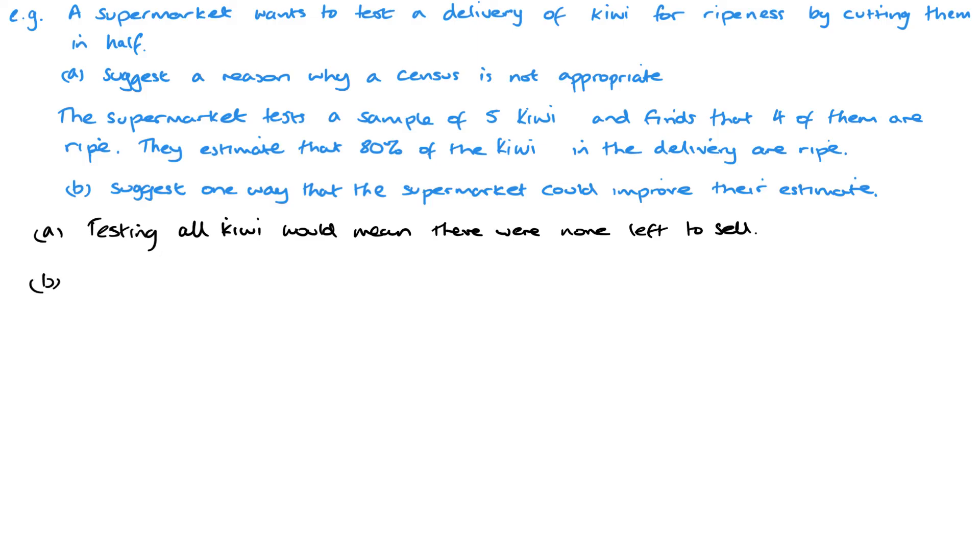Now part b, the supermarket tests a sample of five kiwi and finds four of them are ripe, so they estimate that 80 percent of the kiwi in the delivery are ripe. Now one way we can improve on this is simply to test more kiwi, a larger sample, because a larger sample would therefore generate a more accurate estimate. It's hard to say exactly what sample size you would take, really depends on how many kiwi you've bought. If you've bought a thousand kiwi then you can easily do a sample of 30, 40 or even 50 kiwi without eating into your profits but by getting a far more accurate estimate.